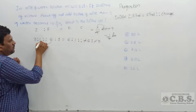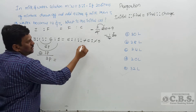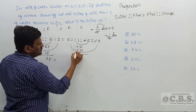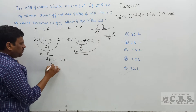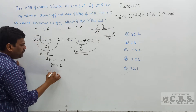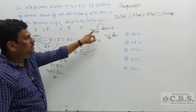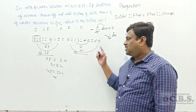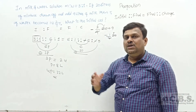Applying the proportion: initial (3:1) to final (6:1) equals final (6:1) to change (-6:-5). Product of means: 6 × 1 = 6 parts and 3 parts. Difference = 6 - 3 = 3 parts. Product of extremes: 6 × 1 = 6 and 6 × 5 = 30. Difference = 24. So 3 parts = 24, meaning 1 part = 8 liters. Since you're asking for initial value which is 4 parts, the answer is 32 liters.